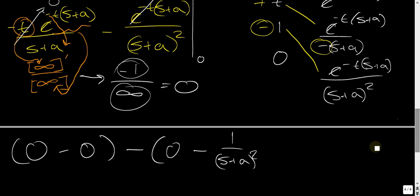Minus one over S plus A squared. Right. So, and then distribute this negative. Distribute this negative here.